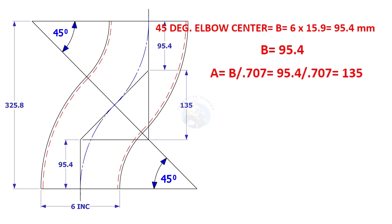A is B divided by 0.707, which is 135 millimeters. C is equal to 2B plus A, which equals 325.8 millimeters.